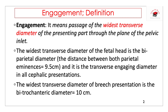The biparietal diameter is the transverse engaging diameter of all cephalic presentations — it is the transverse diameter of the vertex, face, and brow. However, there is another engaging diameter which is the longitudinal diameter of the head, which is affected by the attitude of the fetal head. The widest transverse diameter of the breech is the bitrochanteric diameter, which is 10 centimeters.